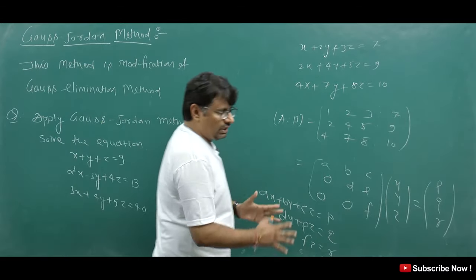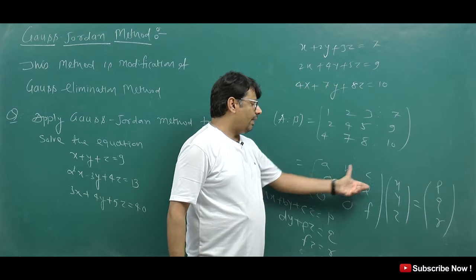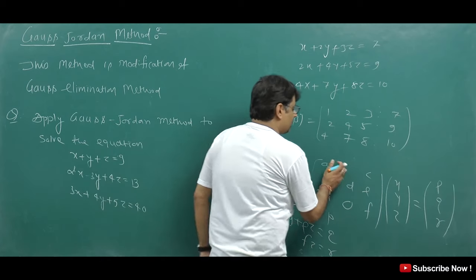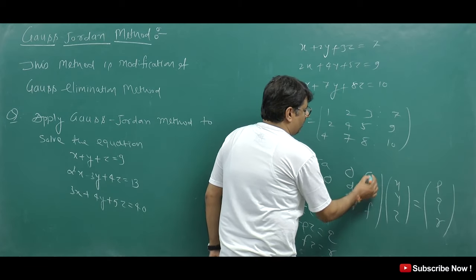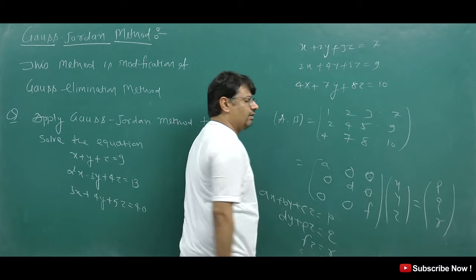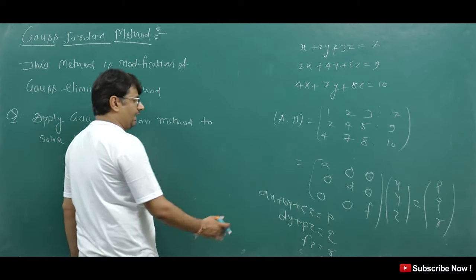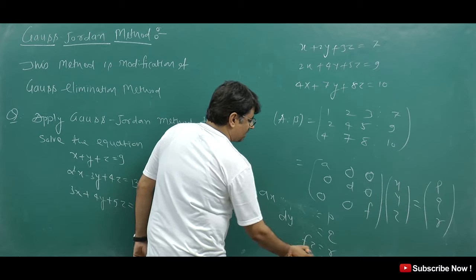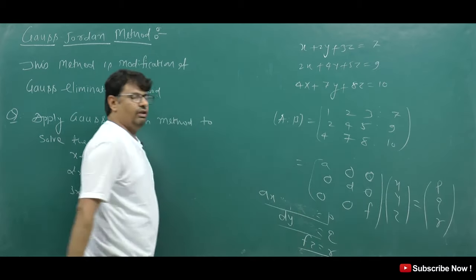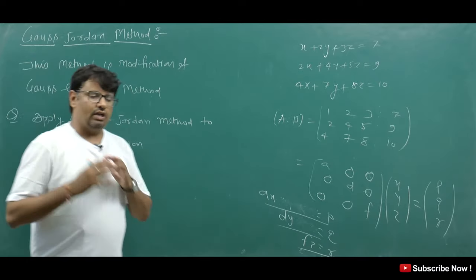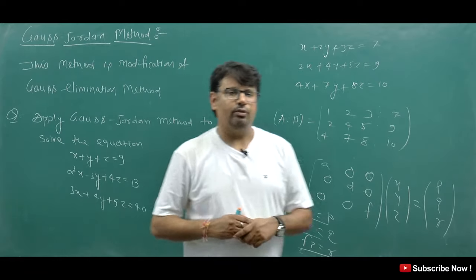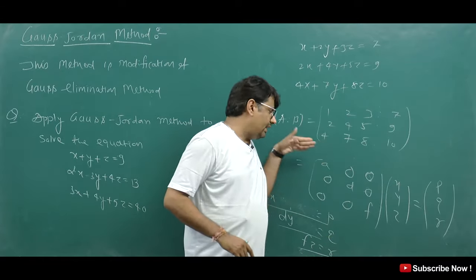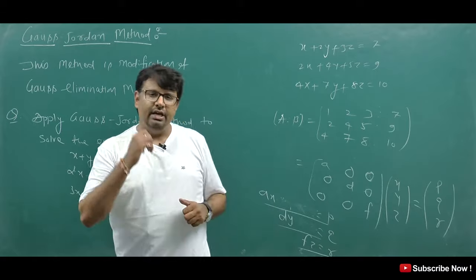So what is the difference in the Gauss-Jordan Method? In Gauss Elimination, we convert the matrix to an upper triangular matrix. But in Gauss-Jordan Method, we apply more transformations to also make the elements above the diagonal zero, converting it into a diagonal matrix. This way, we directly get x, y, and z values without back-substitution. This is the key difference between the two methods.